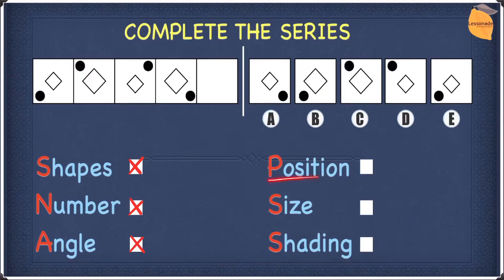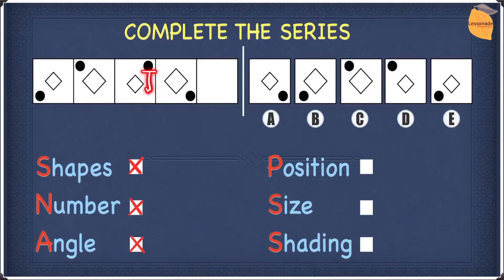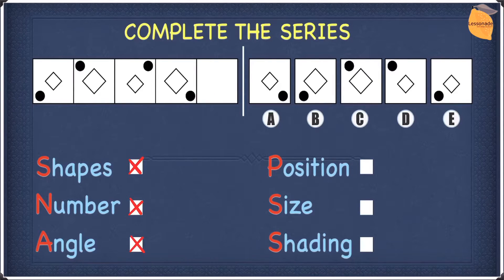In terms of position, if you look at the black circle, it moves one position every time clockwise. From the bottom left it moves up, then to the right, then in the third diagram it moves down. So in the fourth diagram it must go to the left, meaning the circle must be in the bottom left corner. We can cross off any options where the circle is not at the bottom left corner — that eliminates A, C, and D — leaving only B and E. So position works.